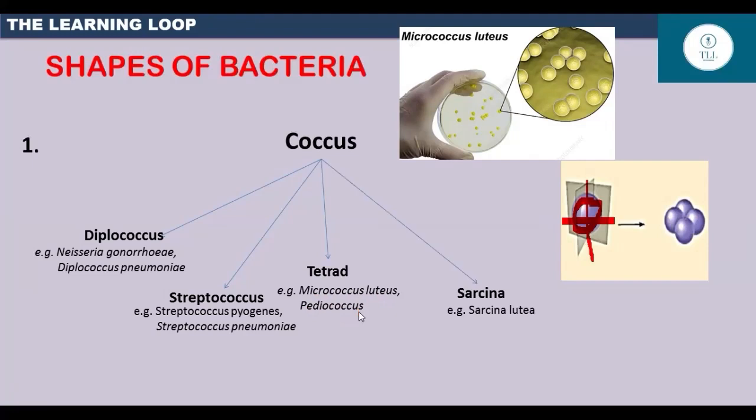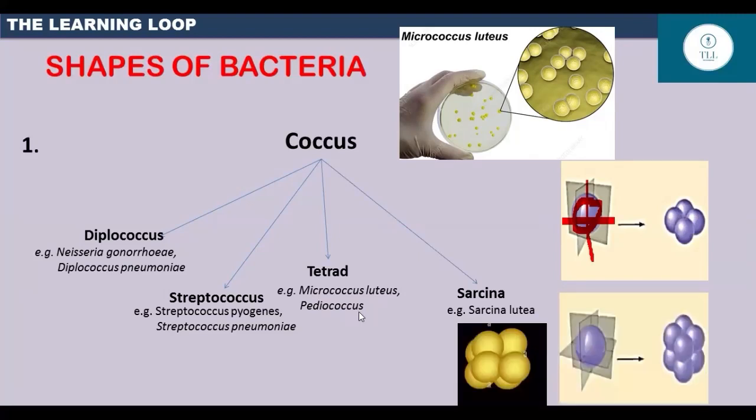The fourth type of coccal arrangement is called sarcina. It is formed when a cell gets divided by three planes of division and it forms a group of eight cells.